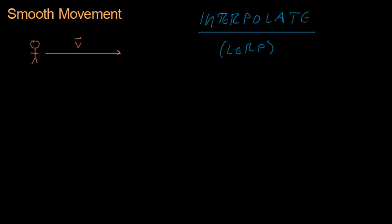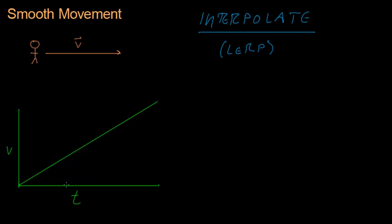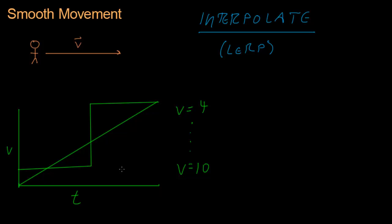I'll draw you a nice picture of what it means in green. I'm going to draw a graph because I love graphs. The bottom is time and the vertical axis is whatever our value is. It starts here and goes up to there, so as time goes forward our velocity slowly goes up. It's not like if I say V equals 4 and then later I say V equals 10 — it'll slam that value directly up to 10, going 4 4 4 4 10 10 10 10. That's not what we want — that's herky-jerky and ugly.